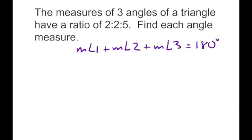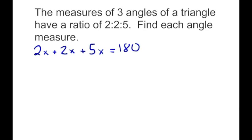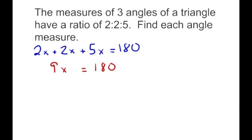We're going to substitute in the measure of each angle. 2x is the measure of angle 1 because the ratio is 2; 2x is the measure of angle 2 because the ratio is 2; and 5x is the measure of angle 3 because that's the ratio. Adding those together: 2x plus 2x plus 5x equals 9x, which equals 180. Dividing each side by 9, we get x equals 20.